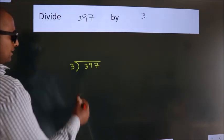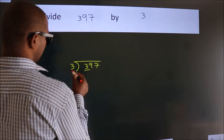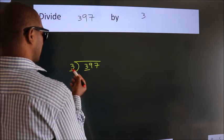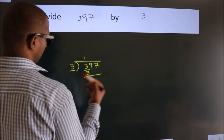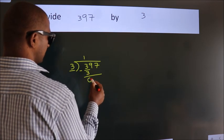Next. Here we have 3. Here 3. When do we get 3? In 3 table. 3 ones, 3. Now, we should subtract. We get 0.